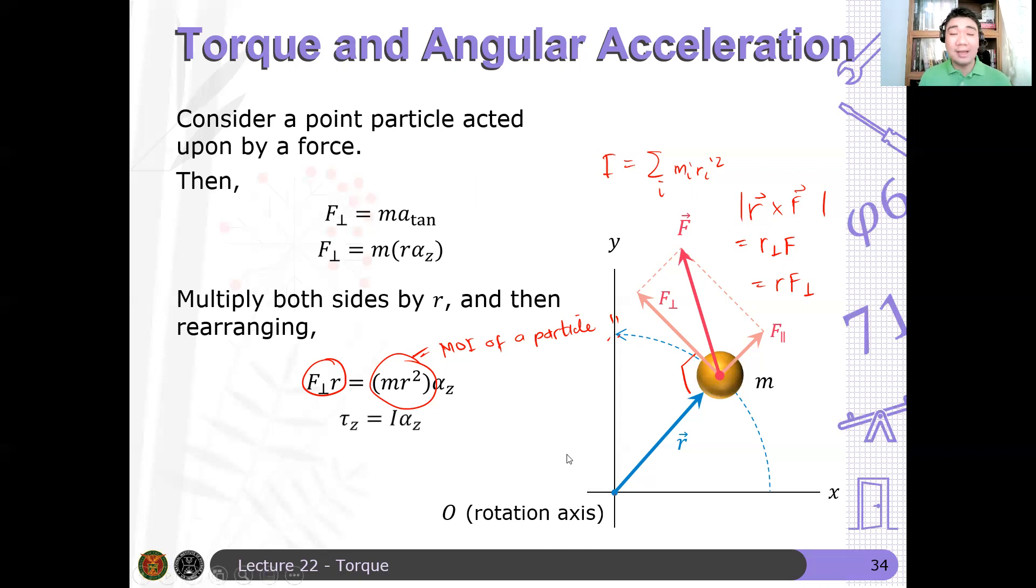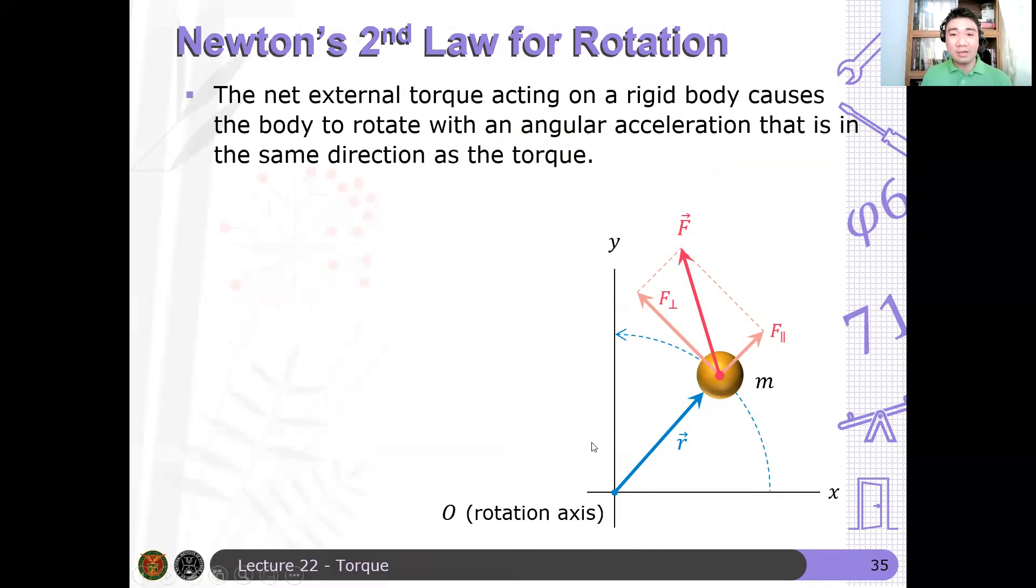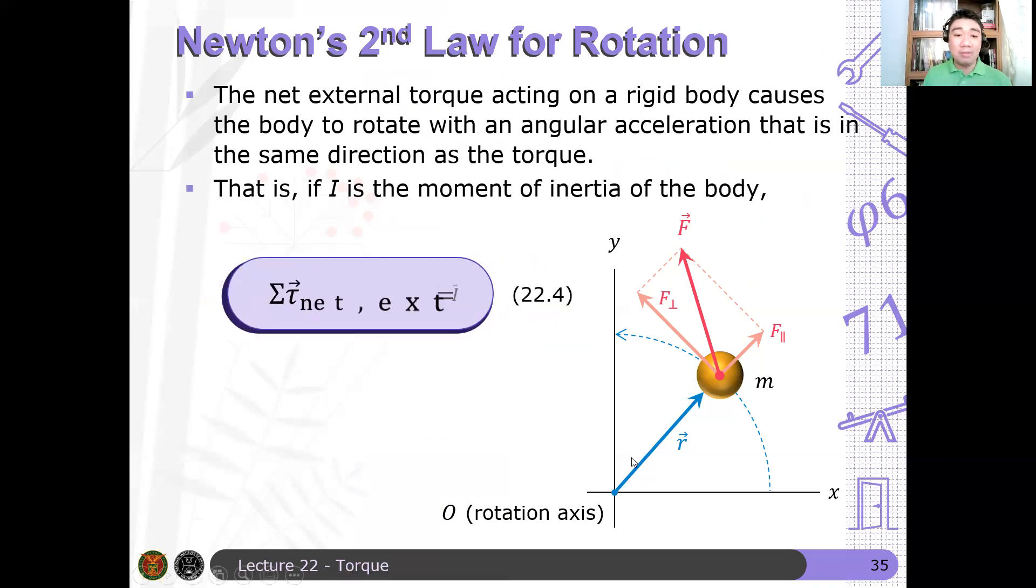And hence, we have shown that tau z, or the torque at the z-axis, is just the product of the moment of inertia i times the angular acceleration z. That is our Newton's second law for rotation. So, the net external torque acting on a rigid body causes the body to rotate with an angular acceleration that is in the same direction as the torque. That is, if i is the moment of inertia, you have tau z is equal to i-alpha. Summation of tau is i-alpha.